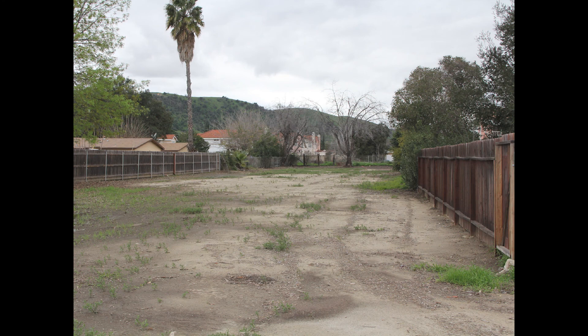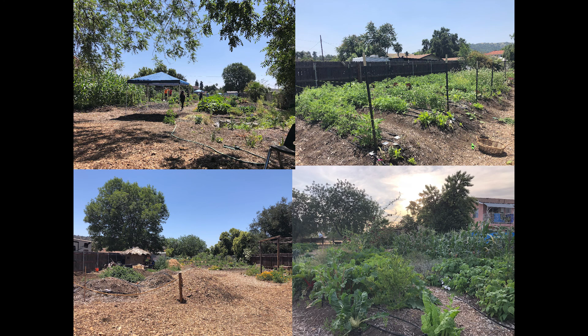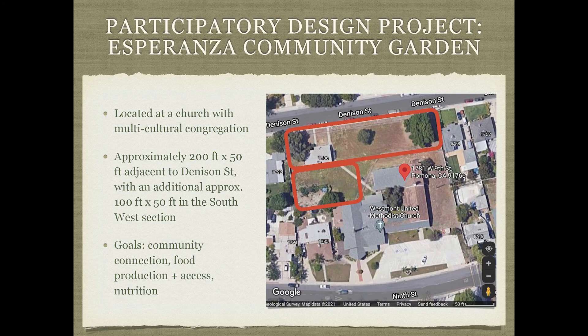This is what the Buena Vista site looked like before — it was a vacant lot the city owned. Eleanor helped initiate this project with a small grant and by setting up the land use agreement with the city. And here are some photos of what it looks like now. The Esperanza site is near Buena Vista — a small site at a church with a multicultural congregation. The area available is about 200 by 50 feet adjacent to the street, plus another section about 100 by 50 feet.